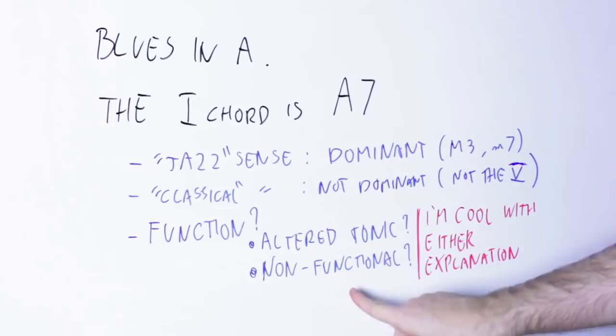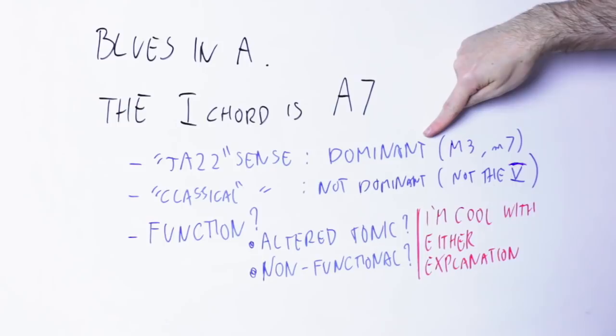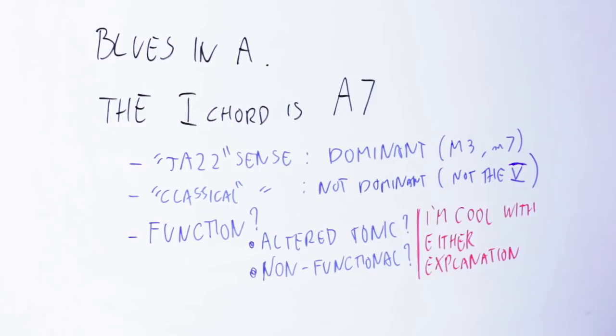So now we have the opposite case as before. This is a dominant chord, at least in the jazz sense, that does not have dominant function. While before we've seen the chord built on the seventh degree of a scale, which were not dominant chords, but had dominant function.